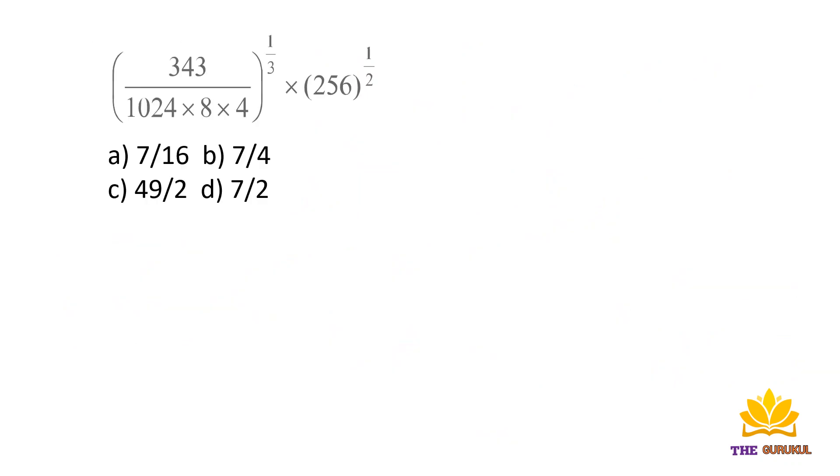Next question: we need to find the value. We will make 343 to the power 1 by 3. 343 is the cube of 7. This is very basic - you should know that 343 is the cube of 7. Then we have 1024.